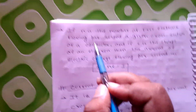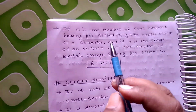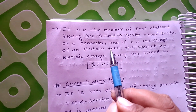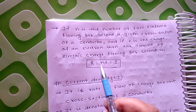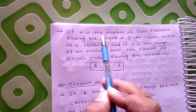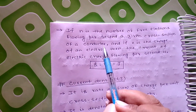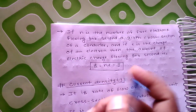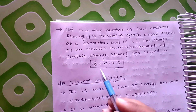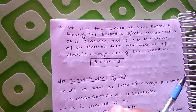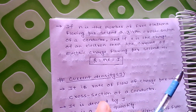If we have a gaseous medium, current flows via positive ions and electrons. If we have a conductor, n number of electrons flow per second. If the electron charge is e, then q is equal to n times e. If n is the number of free electrons flowing per second through a given cross section of a conductor, and e is the charge of an electron, then the electric charge flowing per second is q = ne, and therefore current I = ne.